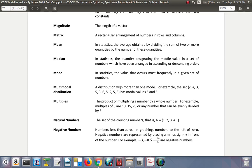Multimodal distribution: a distribution with more than one mode. For example, the set 2, 4, 3, 5, 3, 6, 5, 2, 5, 3 has modal values 3 and 5. Let's see, 3 is there 3 times, 5 is there 3 times.